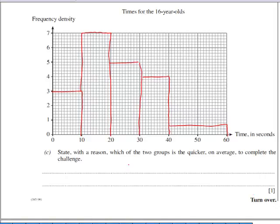In part C you're asked to compare the two histograms to see which group is quicker on average, and it's fairly obvious to see just by looking at this that there's a higher frequency of 16 year olds that complete the test in a quicker time. So I would suggest writing something along those lines.